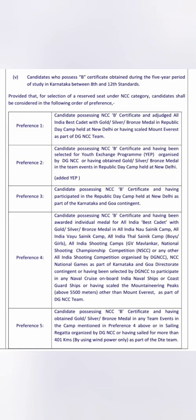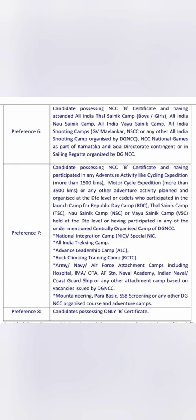For NCC B certificate holders, the preferences are: Preference 1 — NCC B with Gold/Silver; Preference 2 — NCC B with Youth Exchange Program; Preference 3 — NCC B certificate with Republic Day participation; Preference 4 — NCC B with All India Best Cadet category; Preference 5 — NCC B with Gold/Silver Brooch in team events; Preference 6 — NCC B having attended All India Thal Sainik Camp; Preference 7 — NCC B with adventure activity like cycling over 5,000 km or motor over 3,500 km; Preference 8 — candidates with only a valid NCC B certificate not qualifying in preferences 1 to 7.